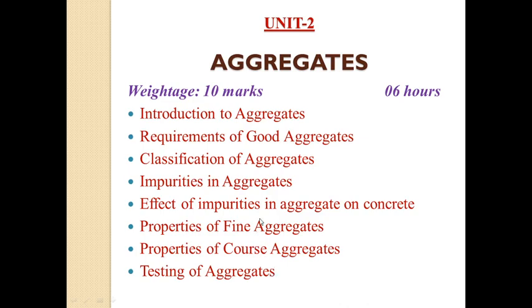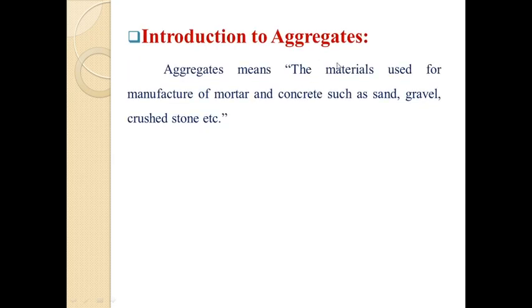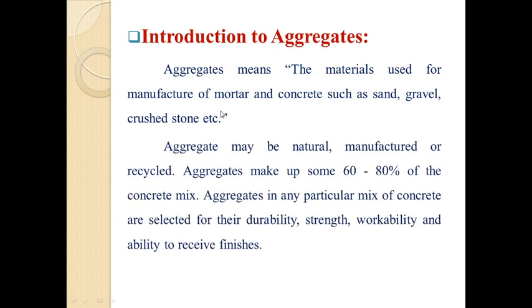Let us see firstly the introduction to aggregates. Here we can see some different types of aggregates. Aggregate is defined as the material used for the manufacture of mortar and concrete, such as sand, gravel, crushed stone, etc. Aggregate gives the body to the concrete and reduces the shrinkage, and also affects the economy.